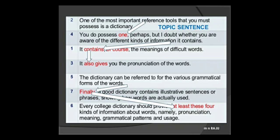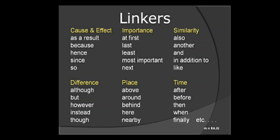Reference information should be connected point to point. Content means linking one point to another. Linkers include cause and effect, importance, similarity — for example: 'as a result,' 'at first,' 'also,' 'because,' 'another,' 'hence,' 'since,' 'most important,' 'in addition to,' 'so,' 'next,' 'like.' For place and time: 'although,' 'above,' 'after,' 'but,' 'around,' 'before,' 'however,' 'behind.'